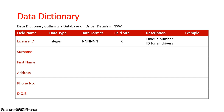The description details that it is a unique number for all drivers, and an example is 1-2-3-4-5. So that's an example of the ID field.